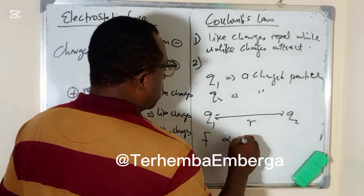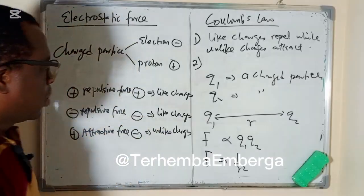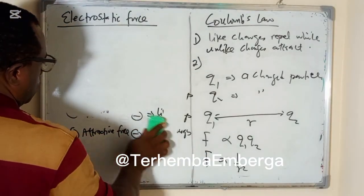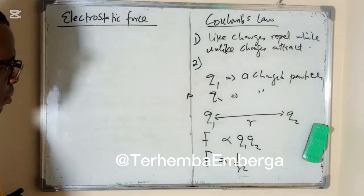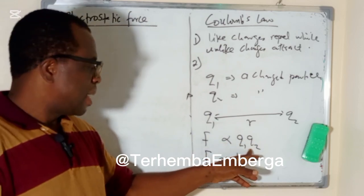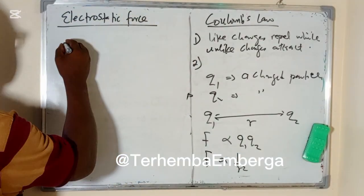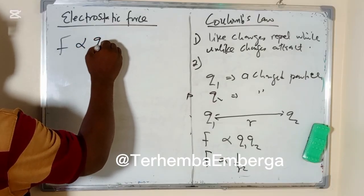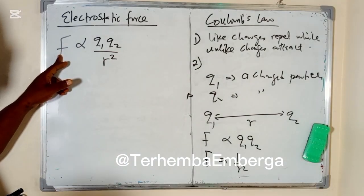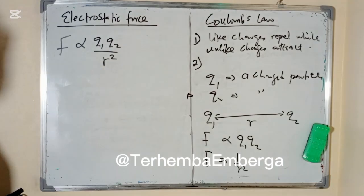Let us look at the implication of this statement. The force of attraction or repulsion is directly proportional to the product of the two charges and inversely proportional to the square of the distance separating them. So mathematically, we can say that F is directly proportional to Q1 times Q2, all over R squared. The force, either attractive or repulsive, is directly proportional to the product of the charges and inversely proportional to the square of the distance separating them.